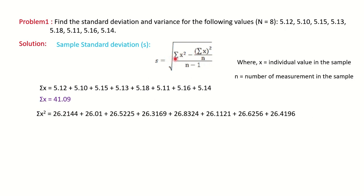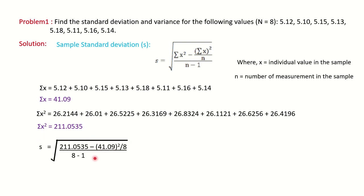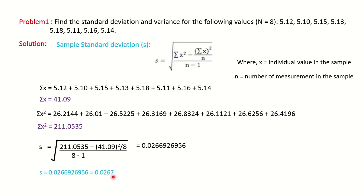The next step is summation of x squared. Square each individual measurement — for example, 5.12 squared gives 26.2144 — and do the summation to get sigma x squared. Then put the values into the formula: solve 41.09 squared, divide by 8, subtract that from 211.0535, and divide by 7. The standard deviation result is 0.0267. Normally we represent analytical results to four decimal places.